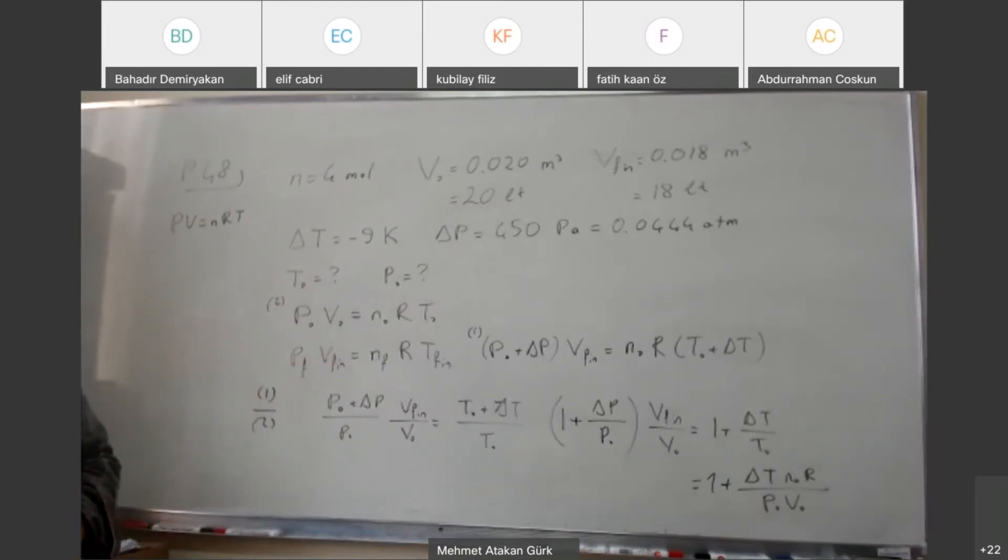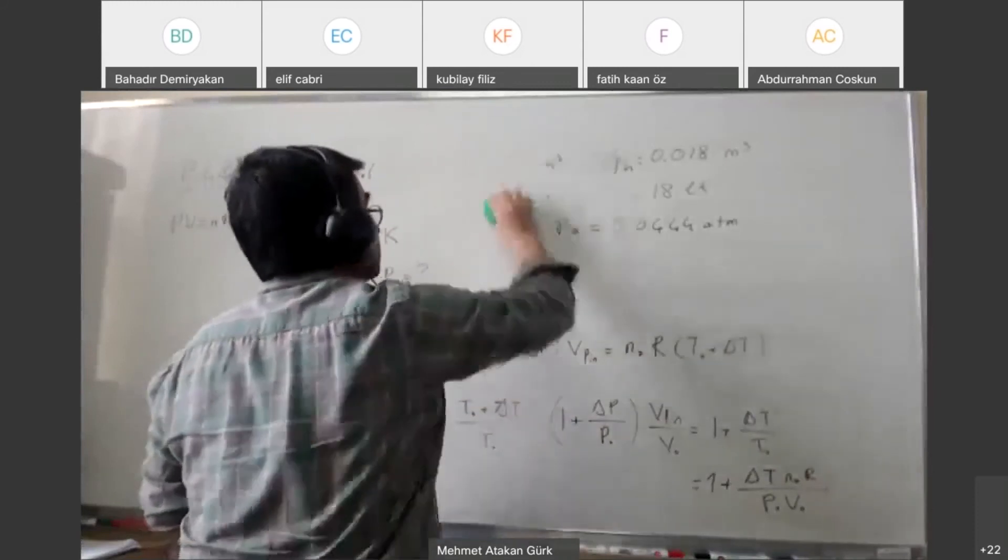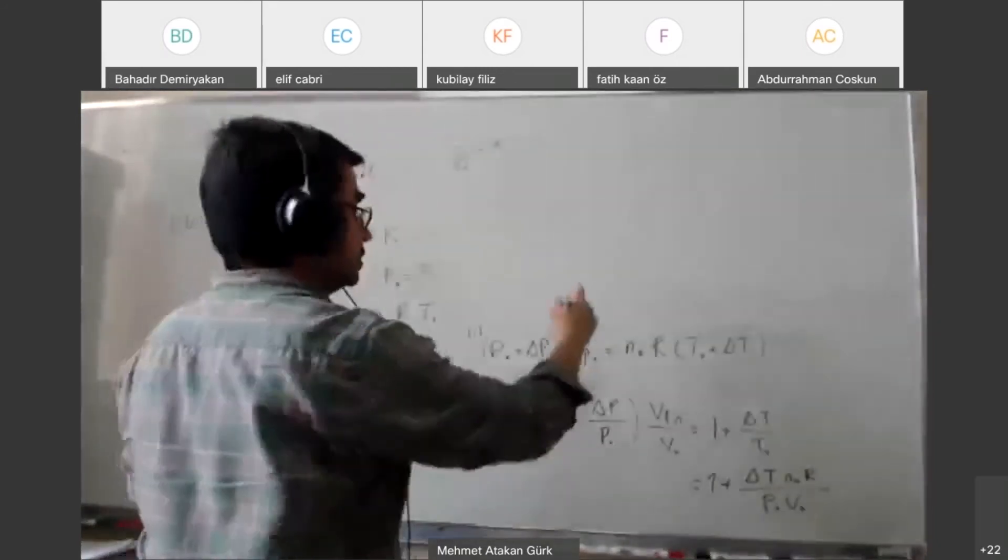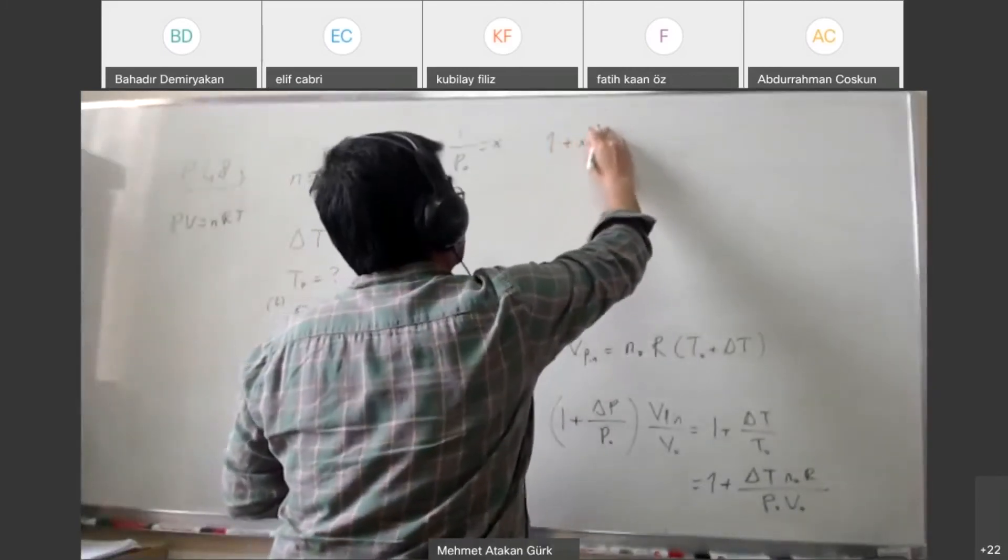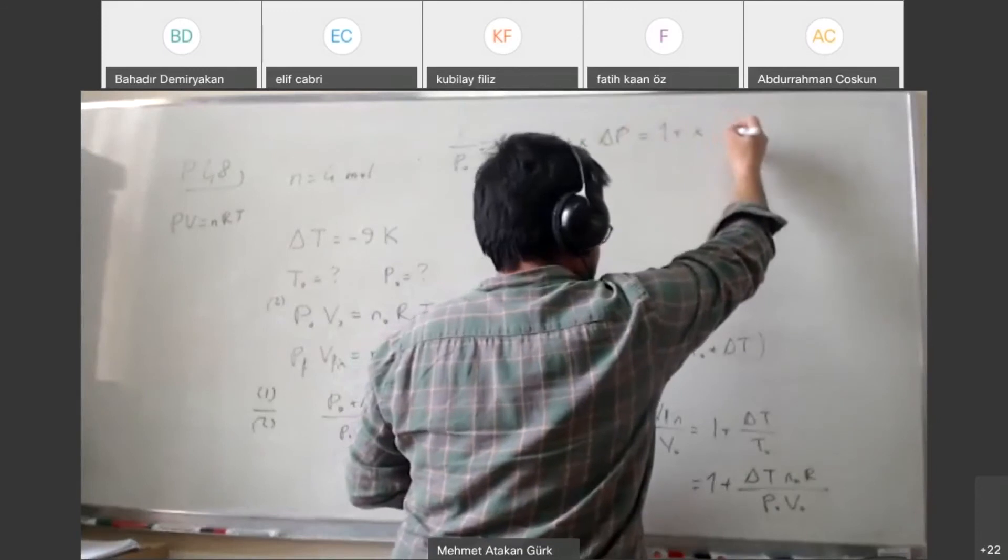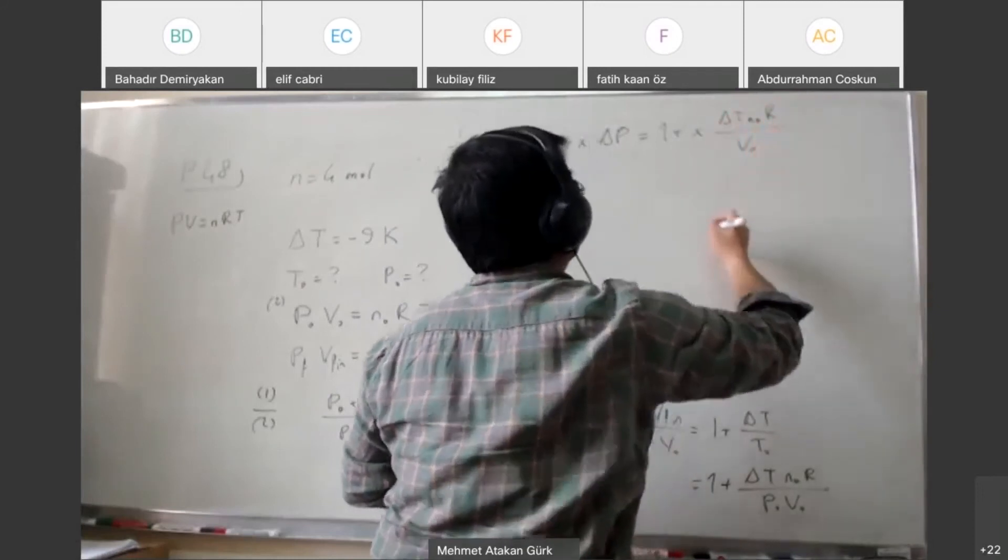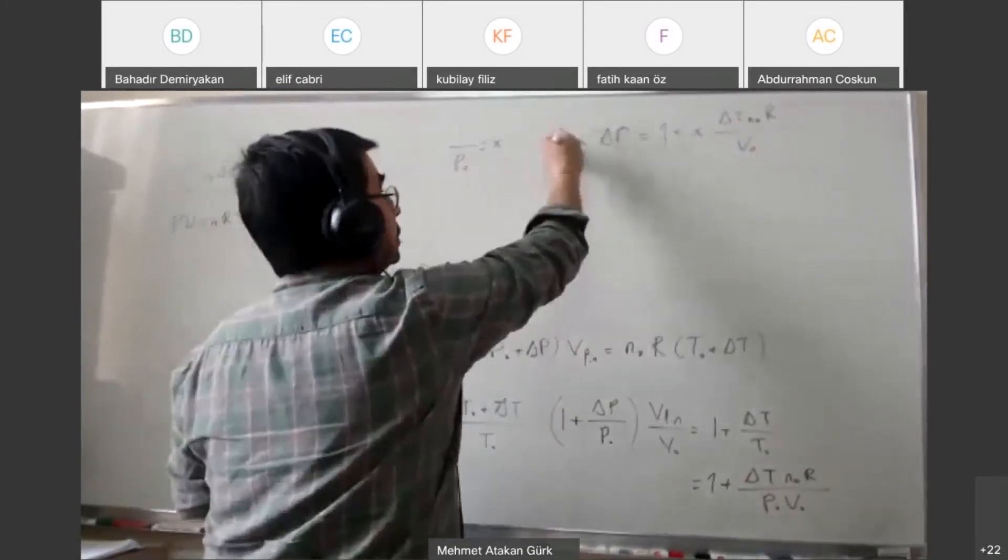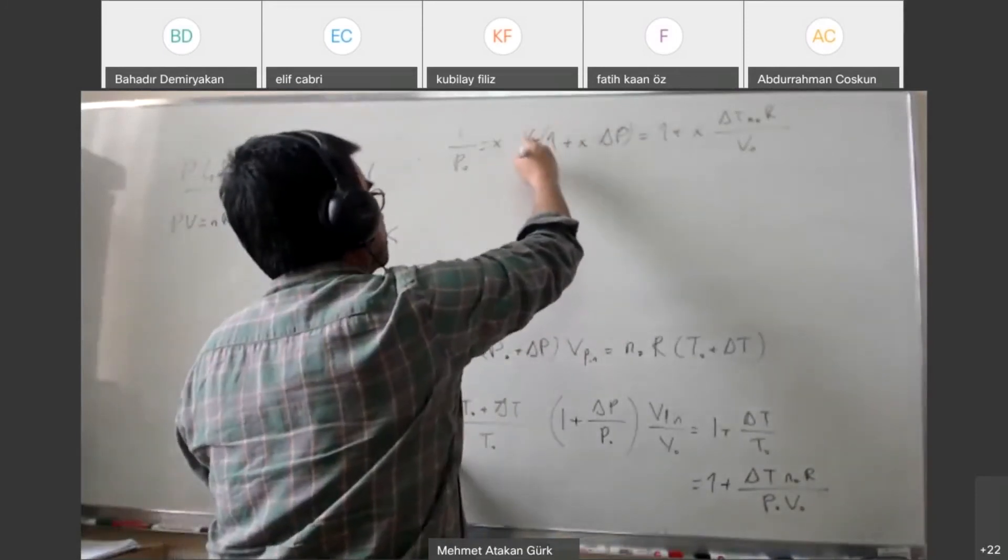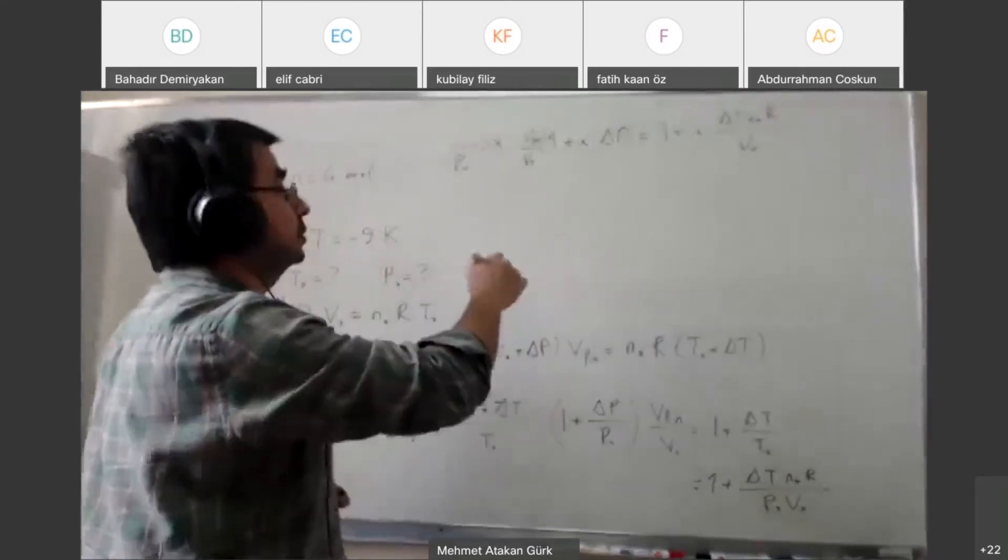I can rewrite this thing as one plus delta T times n0 R by P0 V0. Now I have a single variable P0. And actually it will be easier to calculate this by calling P0, not P0 but one over P0 as x and write an equation for x and solve for that. So I will call one over P0 as x and this is going to be one plus x delta P times V final by V0 equals one plus x delta T n0 R by V0.